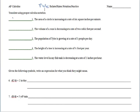On your notes here, you see that the directions are to translate using proper calculus notation. The first problem reads: the area of a circle is increasing at a rate of 6 square inches per minute. To translate that into calculus notation, we want to look at what's going on. The area is increasing at a rate, so we don't want to just use the variable A — we want notation that correctly represents a rate of change of area.